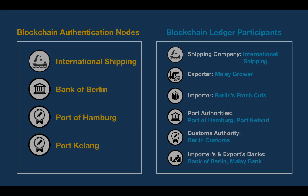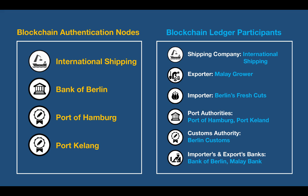In the blockchain network in this example, validation nodes are configured to be some of the parties already mentioned: the shipping company, International Shipping; the importer's bank, Bank of Berlin; and the port authority — Port Kilang and Port of Hamburg were set as validator nodes in this setup.